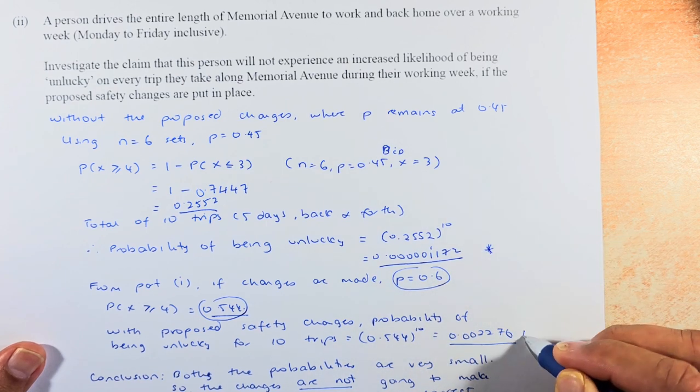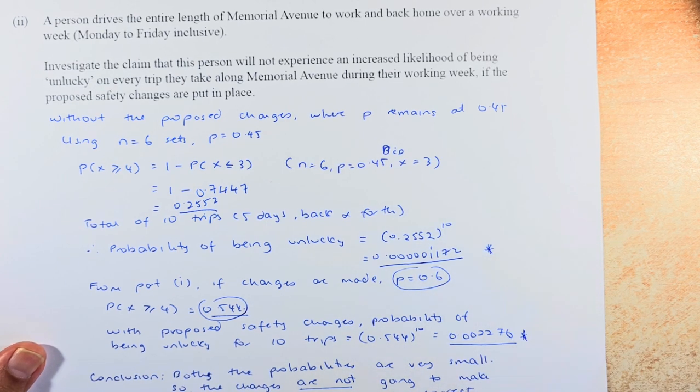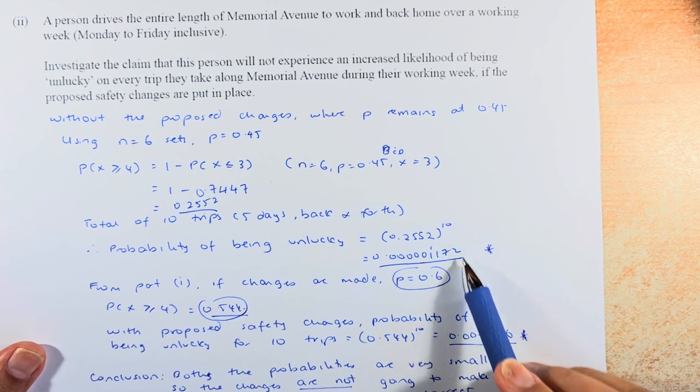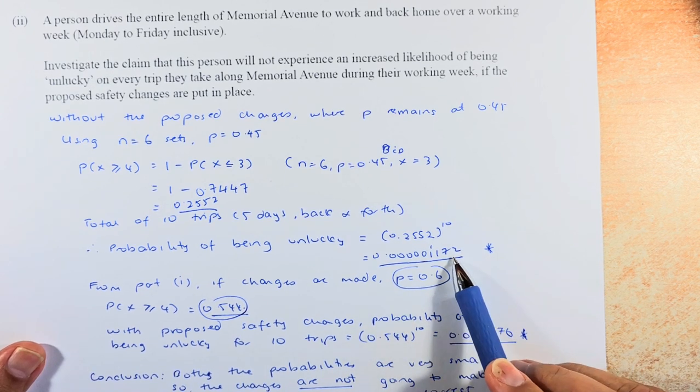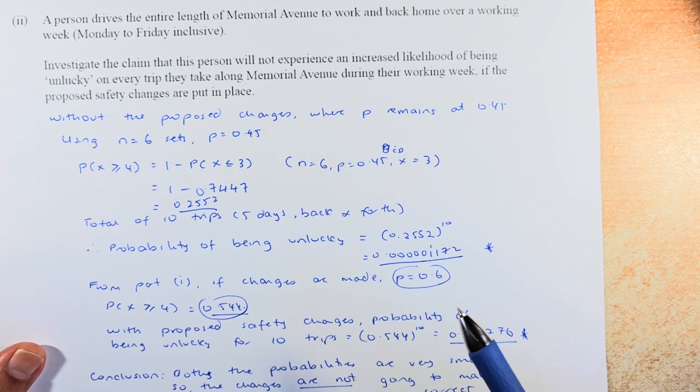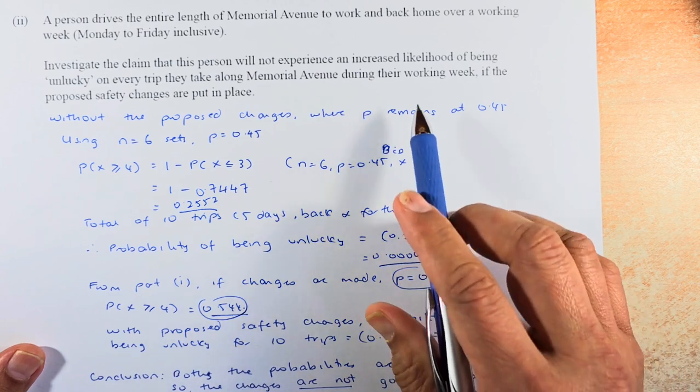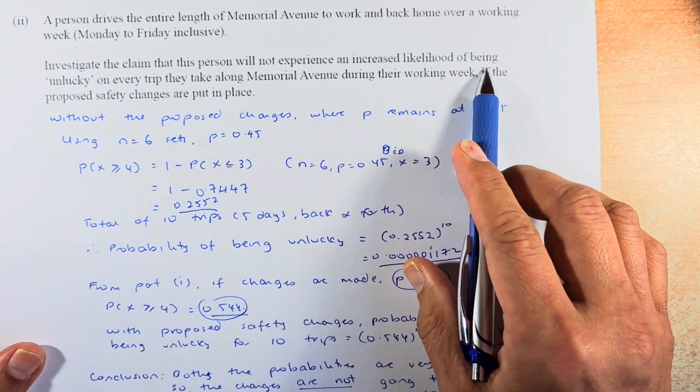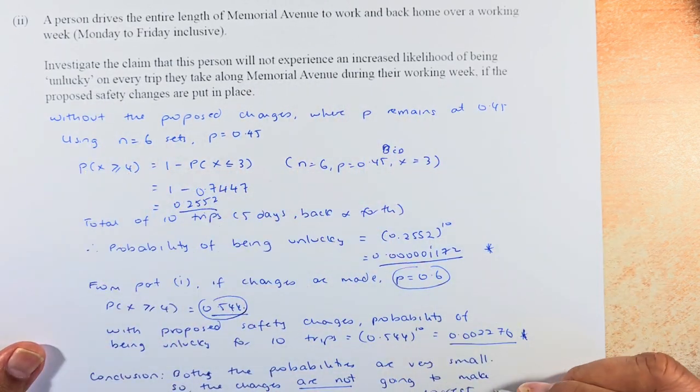So you look at these two probabilities, the chances are small. Because both of these changes and without changes, that probability is very, very small. So the changes are not going to make any difference to the probability. So the claim that you will not experience any likelihood of being unlucky will be correct.